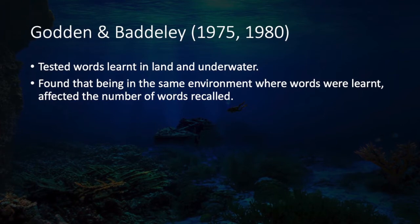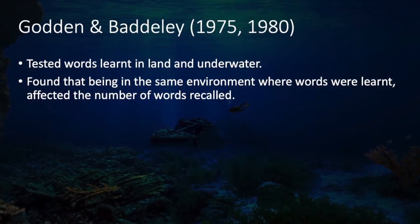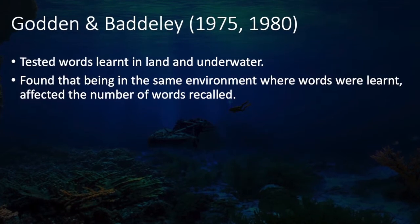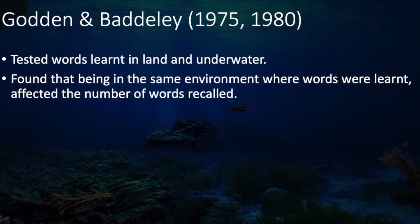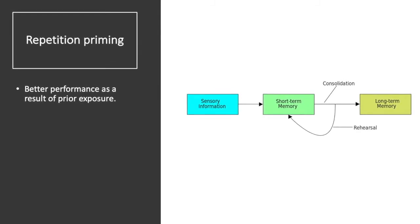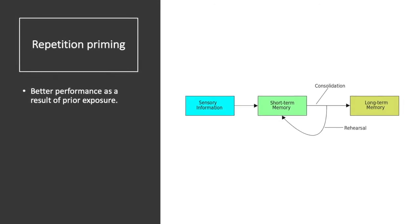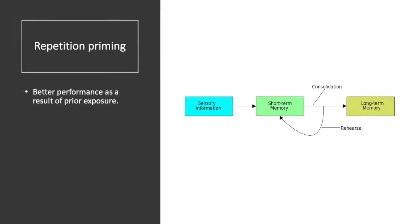Godden and Baddeley in 1975 and 1980 tested words learned on land and underwater. It was found that being in the same environment where words were learned affected the number of words recalled. Repetition priming is defined as better performance of memory as a result of prior exposure to the word or whatever is being remembered.